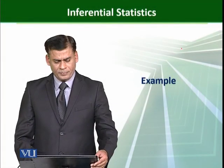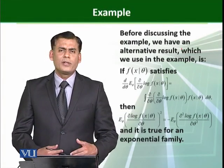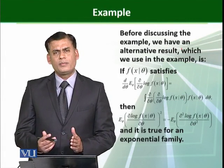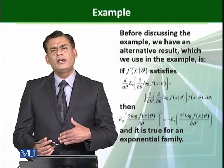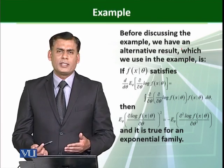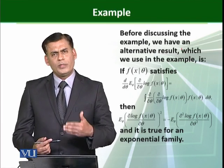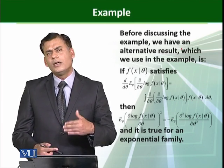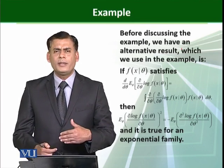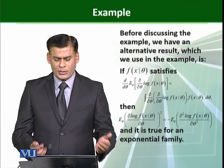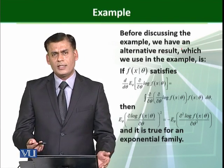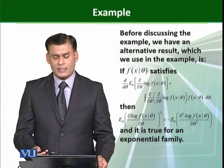Now we take an example. But before discussing this example, there is a certain result. That result we can alternatively use. Sometimes when we have direct results from Cramer-Rao inequality, we can use those in the denominator, and we can also use this result depending upon the situation. So before discussing this example, I am going to state that result.